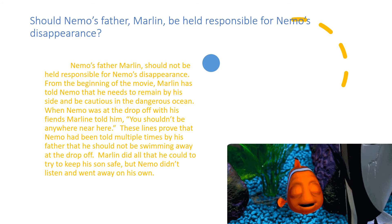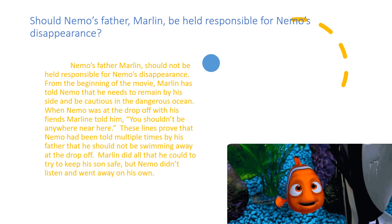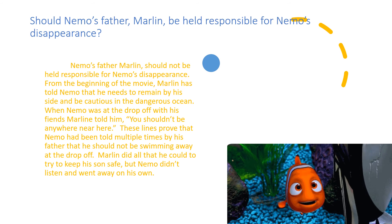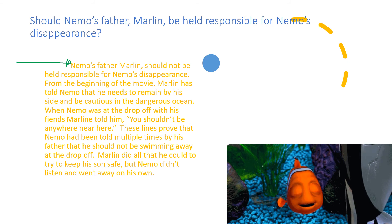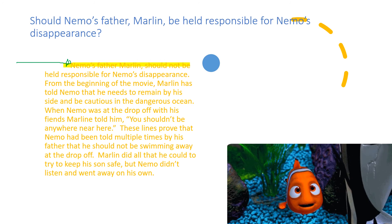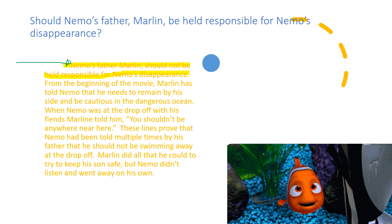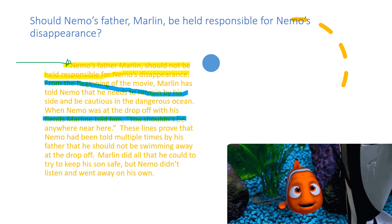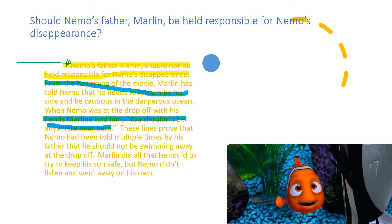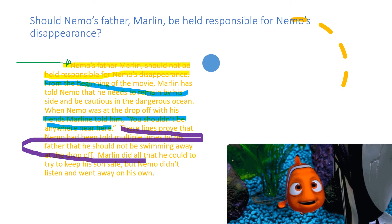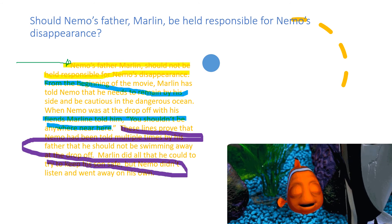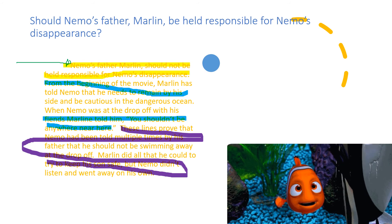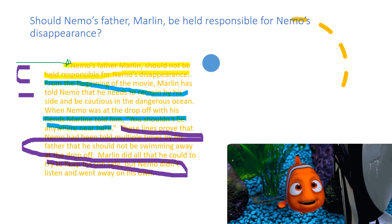Seeing it in paragraph form — notice the paragraph is indented. The first line is my claim. My next two lines are my pieces of evidence. And my last lines are my reasoning. This is actually a way for you to self-check: do you have a claim? Do you have your evidence? And do you have your reasoning?